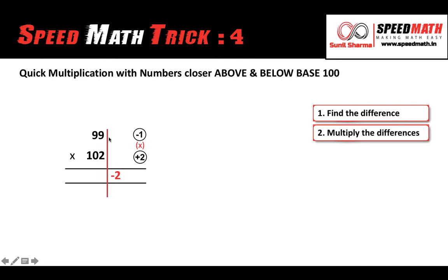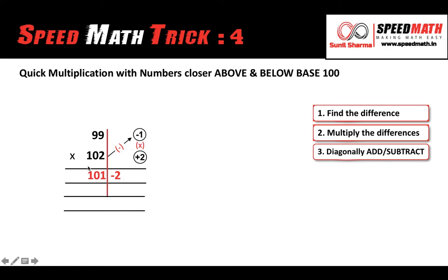The next step is to either add diagonally or subtract diagonally — whichever is comfortable to you. Here I'm going to subtract diagonally: 102 minus 1 gives you 101. So we have two parts: on the left-hand side we have 101, and on the right-hand side we have minus 2. We can't have a minus sign in the answer, so we remove it using a two-step process. Step 1: take the difference of the right-hand side number with the base — 100 minus 2 gives you 98. Step 2: subtract 1 from the left-hand side number — 101 minus 1 gives you 100.